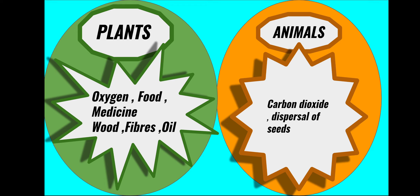Plants give us medicines, wood, fiber, oil, and more. Animals also help plants in several ways. When an animal dies, its body decomposes and mixes with the soil. Plants use this nutrient-rich soil for their growth.